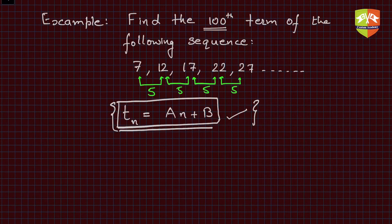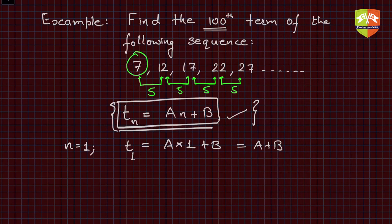If you see clearly here, when n = 1, t1 is A times 1 plus B, which is A + B. But in the given sequence, t1 is 7, so we can say that A + B = 7.